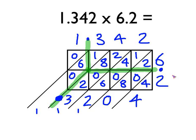OK, 1 add 6 is 7. Add the 0 is still 7. Add the 1 we carried makes 8. And then in the last column, the total of that column is just 0. So you can see that the answer to this question is 8.3204.